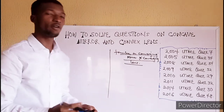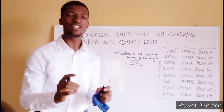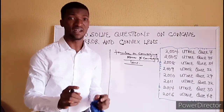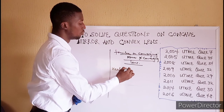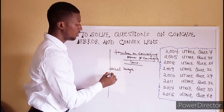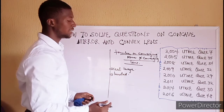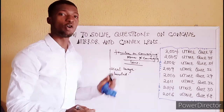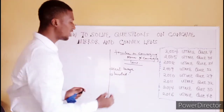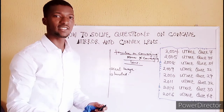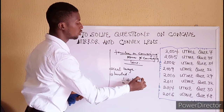Now we want to look at the formulas applicable to a converging mirror and a converging lens. In the real sense of use, a converging mirror and a converging lens can be used to form a real image. The image is said to be real and inverted. When you are dealing with the object distance U, the image distance V, and the focal length F, you use the mirror formula: 1/U + 1/V = 1/F.